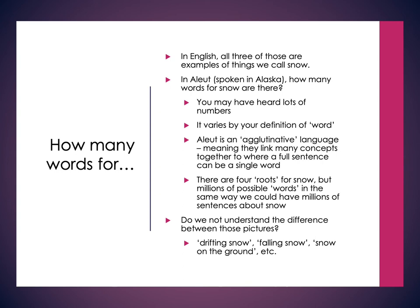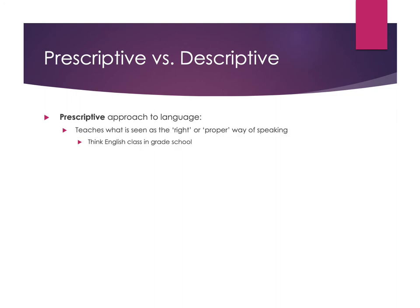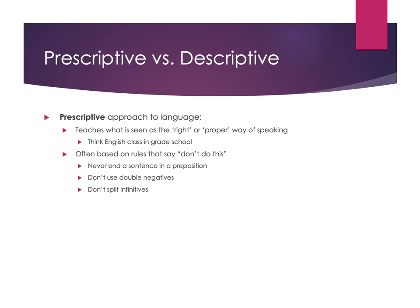Another main aspect that makes linguistics unique is thinking about things that are either prescriptive or descriptive. Prescriptive approaches to language are things you've probably learned in grade school — taught as the right or correct way of speaking. A prescriptive approach tells you the right or proper way. In language classes, you're typically learning these prescriptive rules. But these are often based on rules that say 'don't do this.' Common examples in English are: never end a sentence in a preposition, don't use double negatives, don't split infinitives. But all of these are actually natural to English in most dialects.